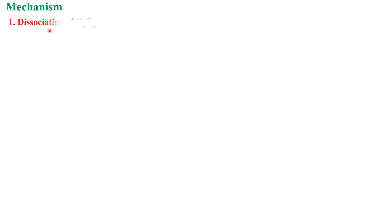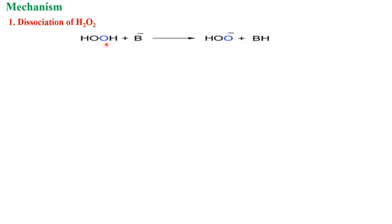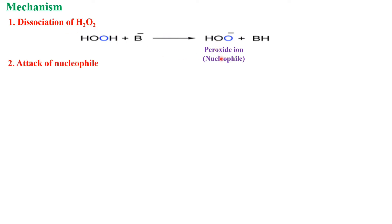Now we will see the mechanism. There are four steps. The first step is dissociation of hydrogen peroxide. H₂O₂ is treated with a base; one proton is removed from the hydrogen peroxide, leaving only –OOH, which is called the peroxide ion with a negative charge. That is why it acts as a nucleophile.